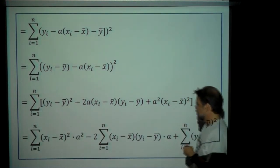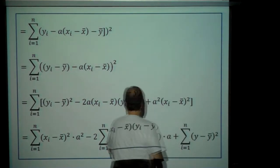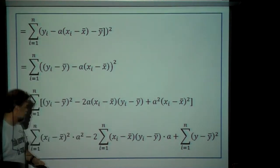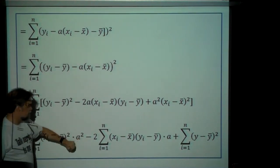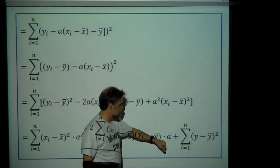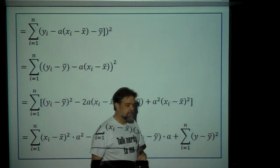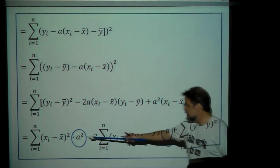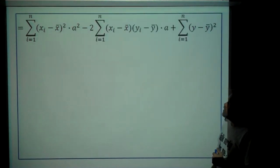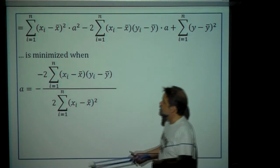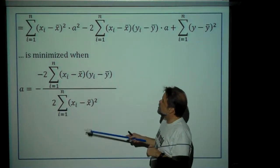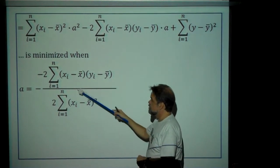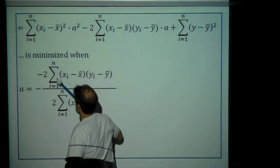Grouping y-sub-i minus y-bar together, minus a times (x-sub-i minus x-bar), I have one thing minus another thing squared. Expanding the binomial: that's (y-sub-i minus y-bar) squared minus two times the first term times the second term plus the second term squared. Reordering and splitting the sums: this sum times a-squared minus two times this sum times a plus this sum. This is a quadratic equation in a, so it's minimized when a equals negative middle coefficient divided by two times the first coefficient.